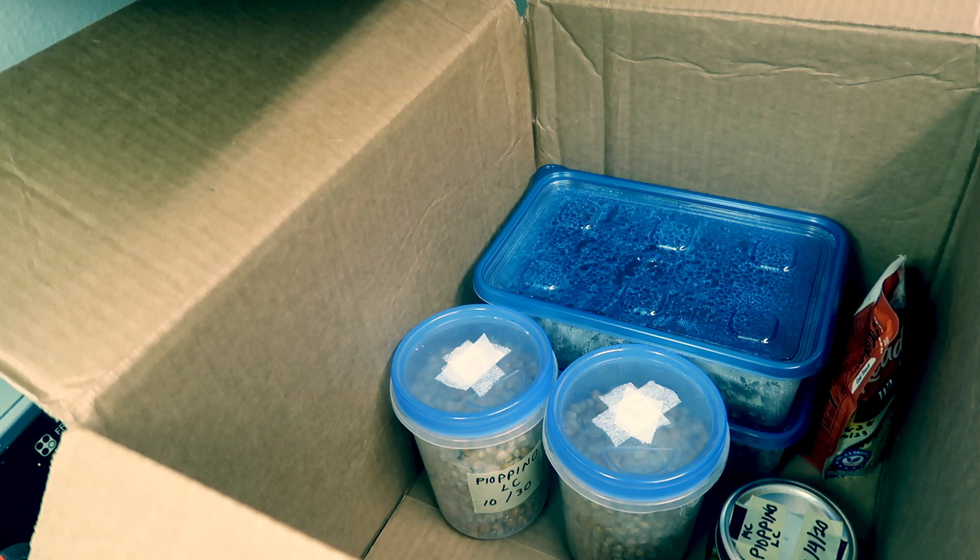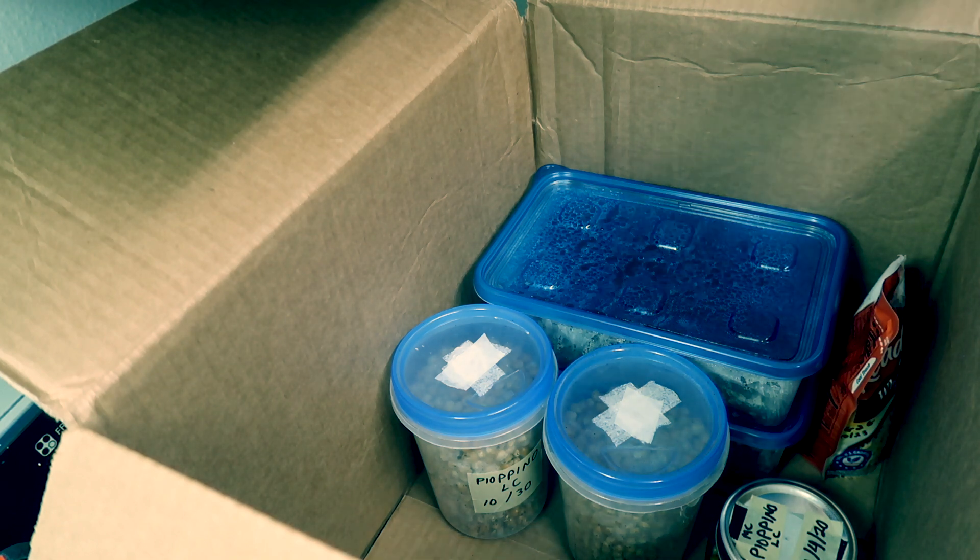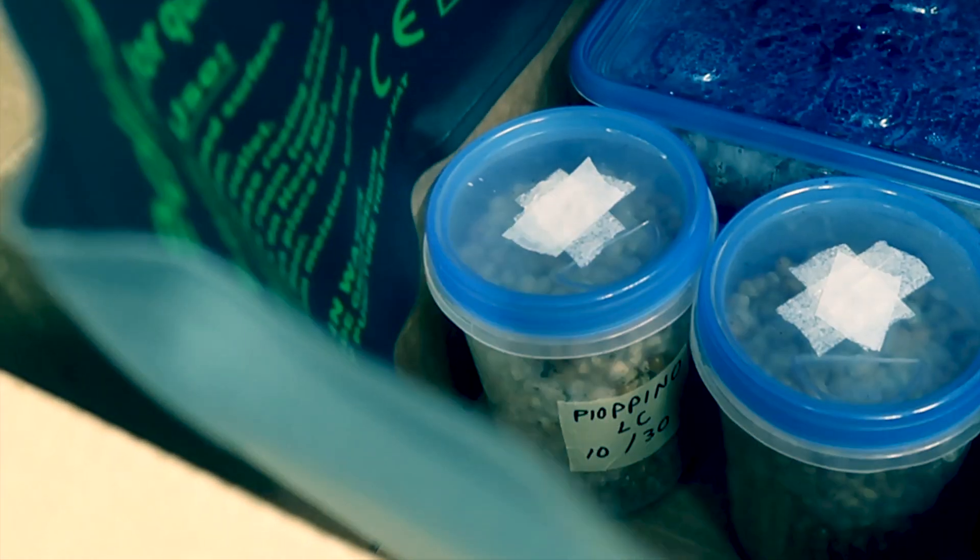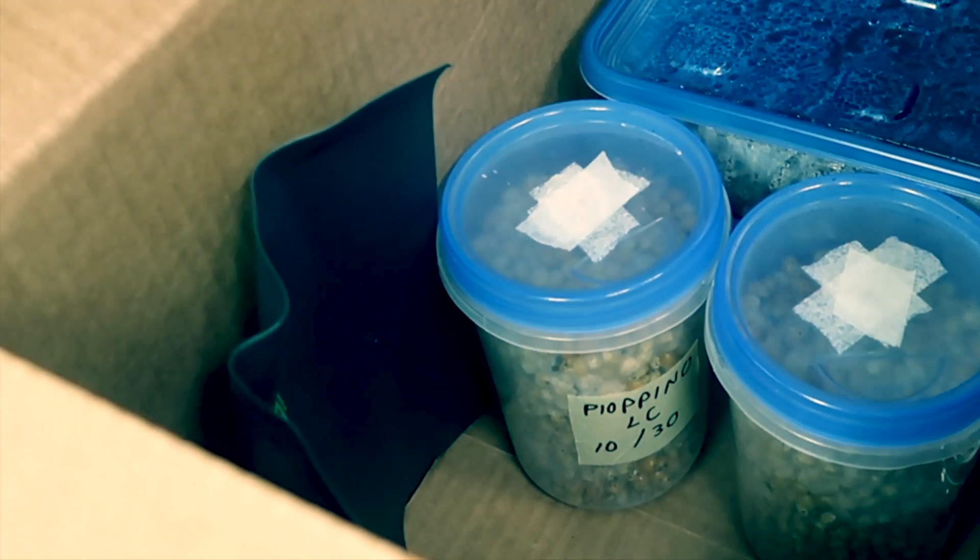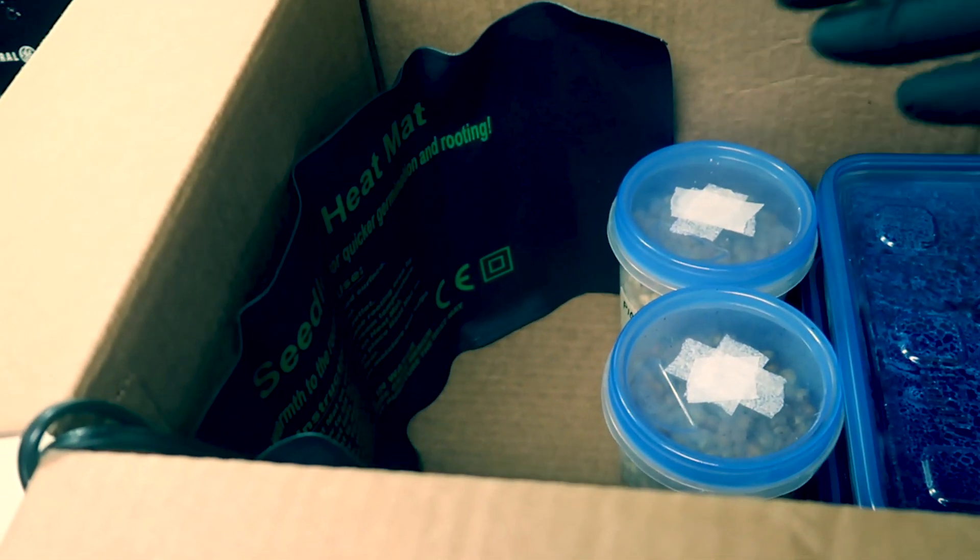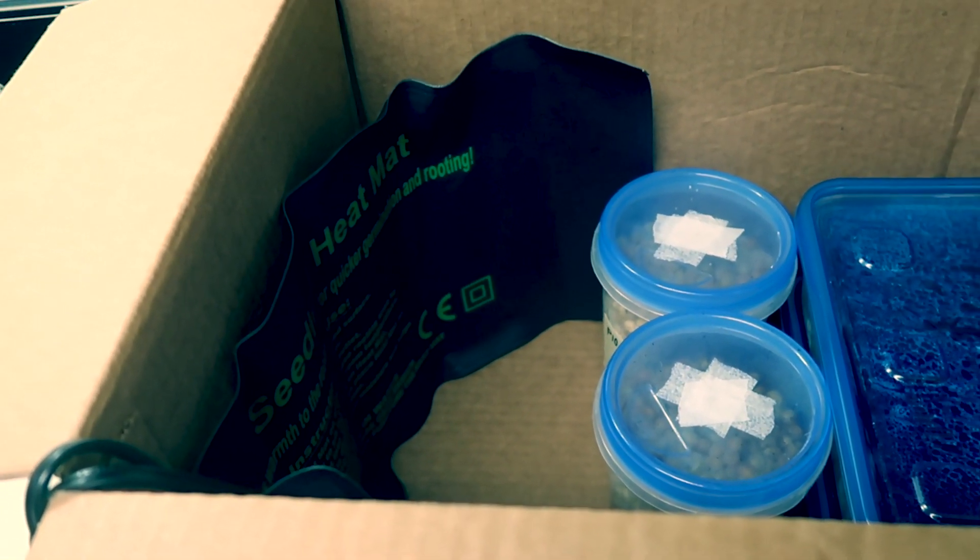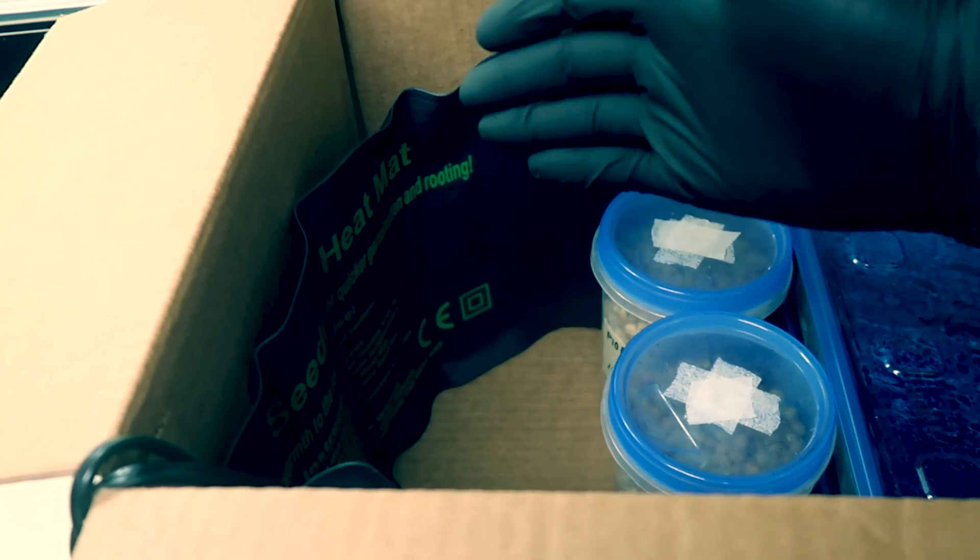How we are going to set up this heat mat inside of this box is we're going to use it to heat the air around inside of the box and around the grains. Each heat mat is going to be different, you really need to play around with the temperature settings because you don't want to put your grains directly on the heat mat.